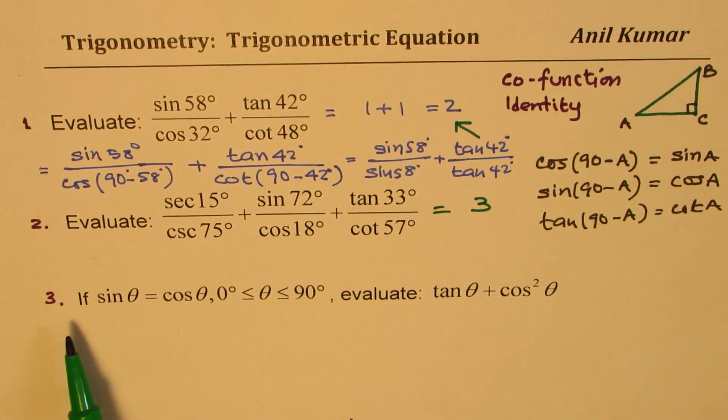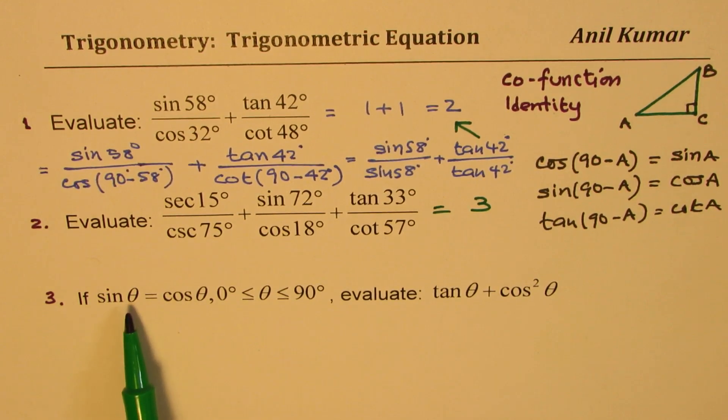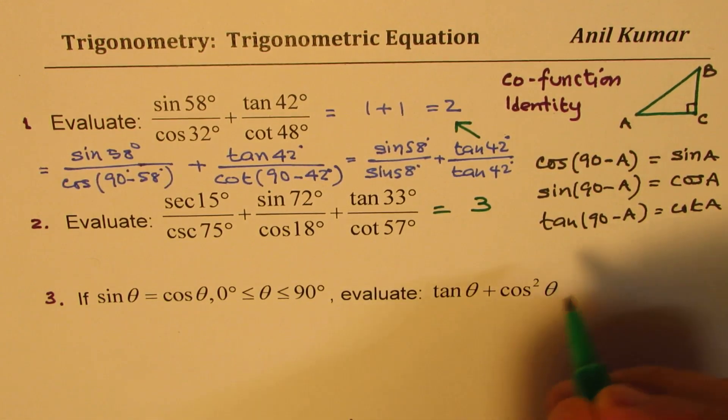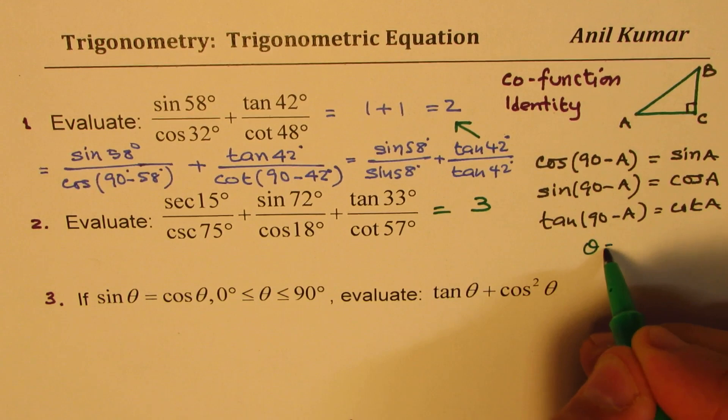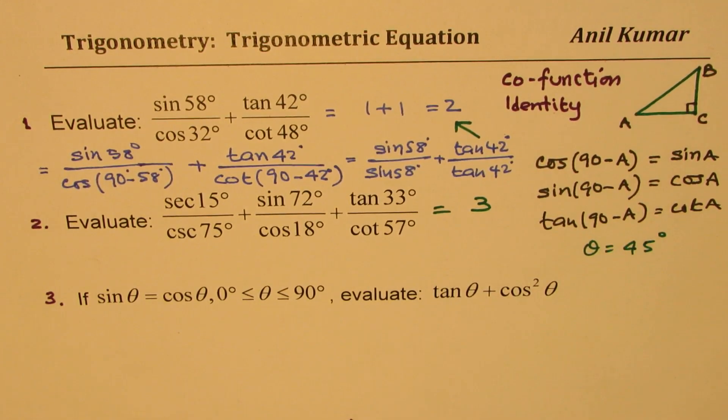Now let's look into third question, which is sine theta equals to cos theta. Now this happens when theta is 45 degrees. So in this case, theta equals to 45 degrees, then sine theta equals to cos theta. You get my point?